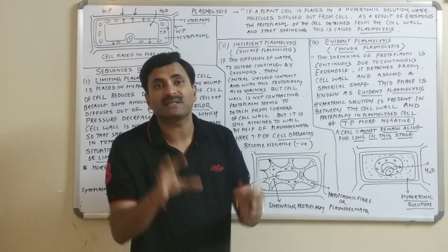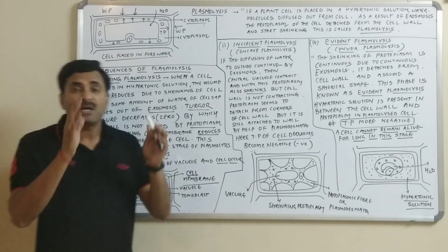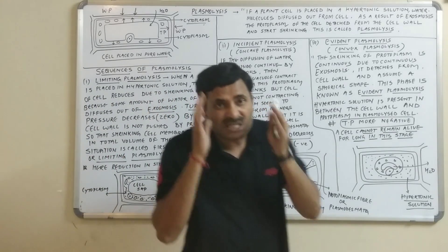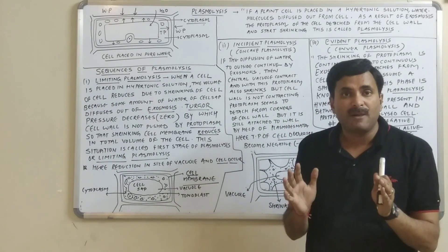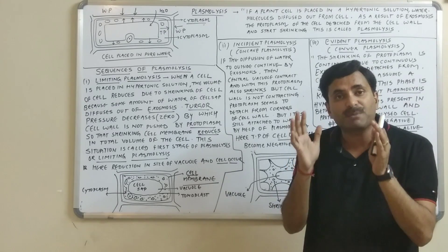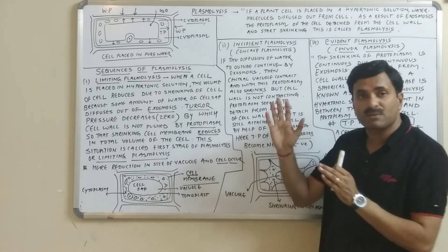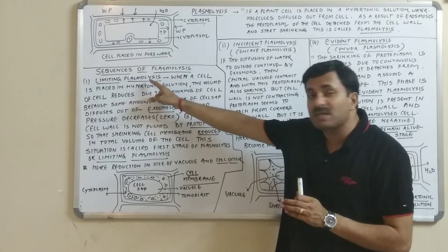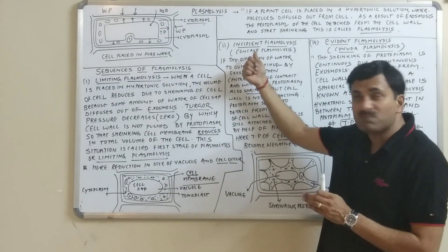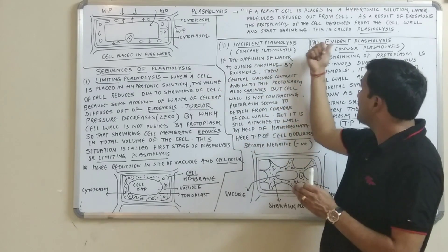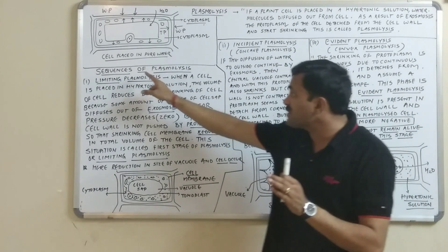This plasmolysis phenomenon is completed in three steps. The very first step is limiting plasmolysis, the second step is incipient plasmolysis, and the third step is evident plasmolysis.